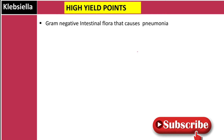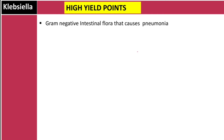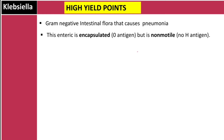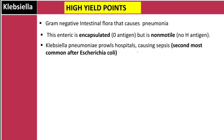Klebsiella pneumoniae is a gram-negative intestinal flora that causes pneumonia. The key point is that it is part of the normal flora. This enteric is encapsulated — it has a capsule with a K antigen — but it is non-motile, meaning it has no H antigen and no flagella.